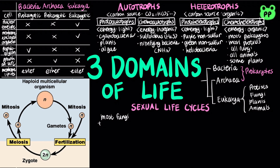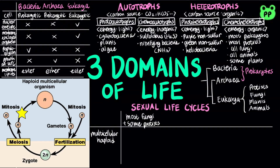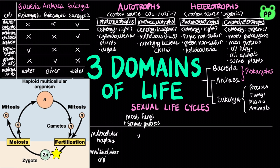In most fungi and some protists, each haploid cell grows by mitosis into a haploid multicellular organism, and the haploid adult produces gametes by mitosis. Then fertilization of gametes creates a diploid zygote. However, the zygote is the only diploid stage, and there is no multicellular diploid stage. The zygote produces haploid cells by meiosis, which develop into adult organisms, and the life cycle starts again.